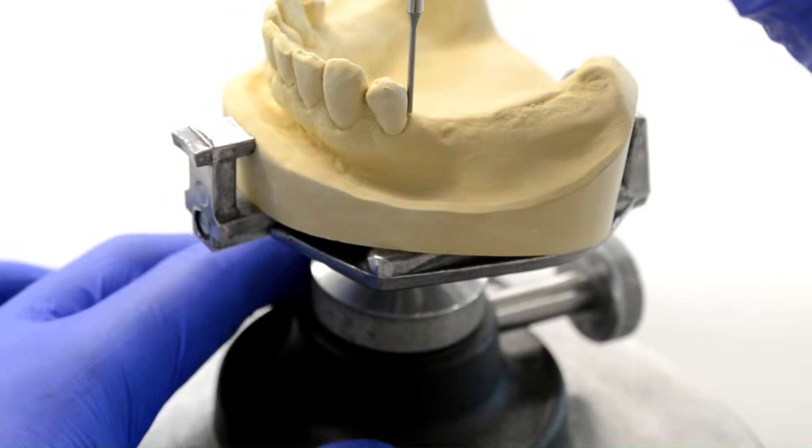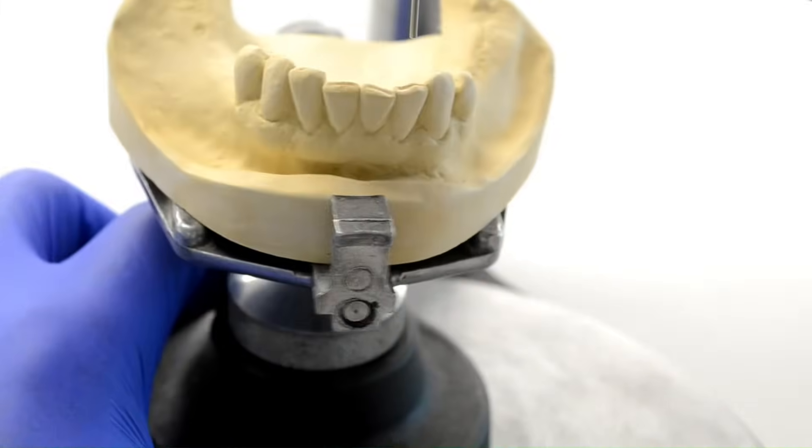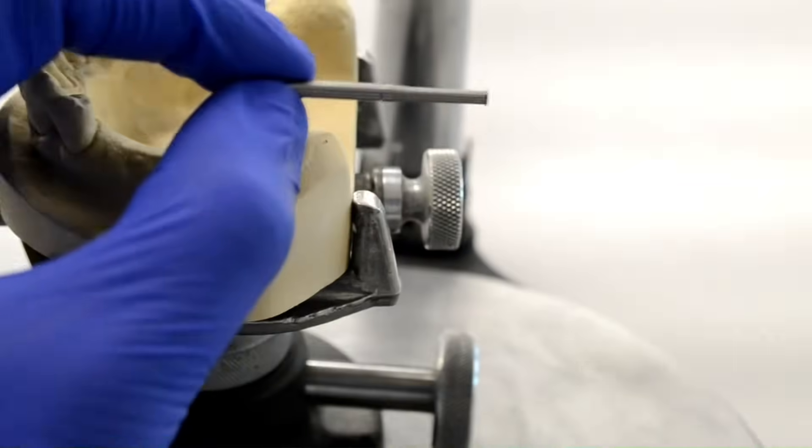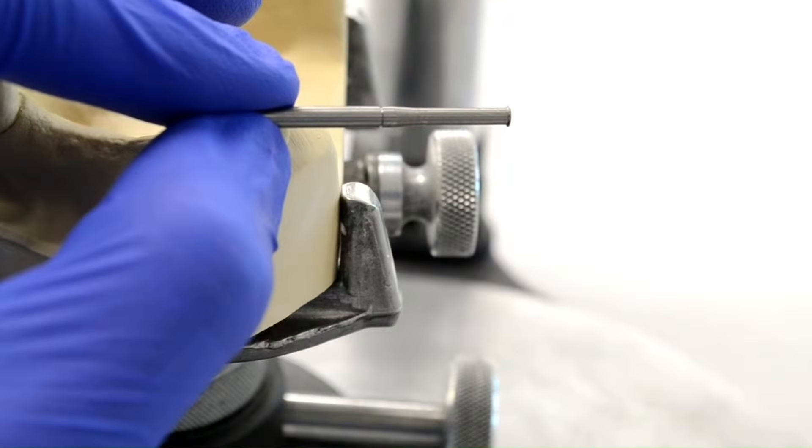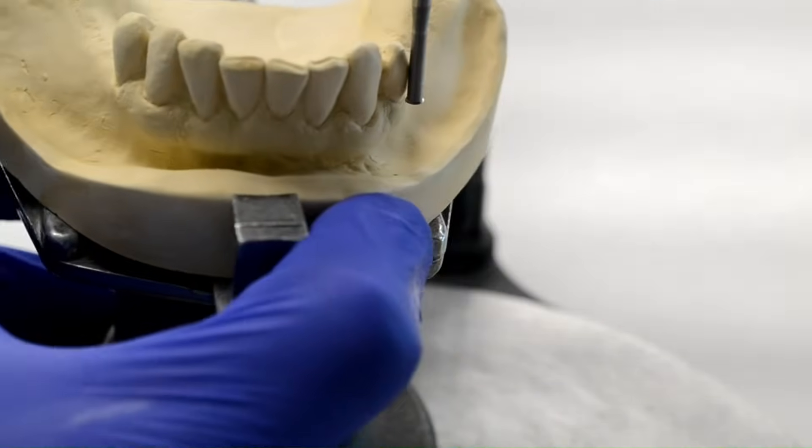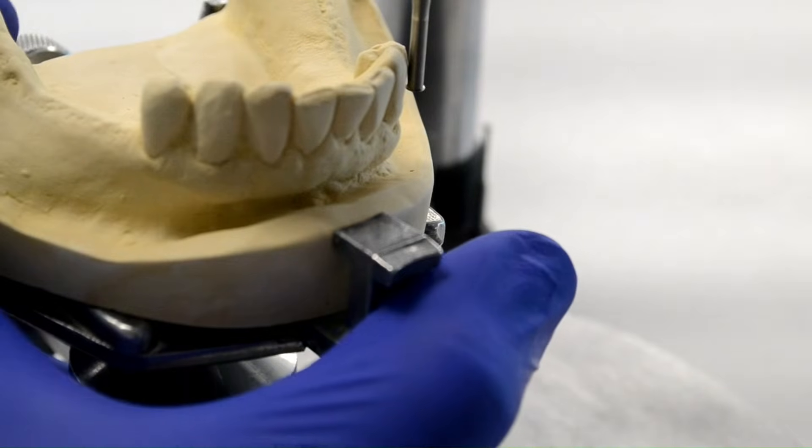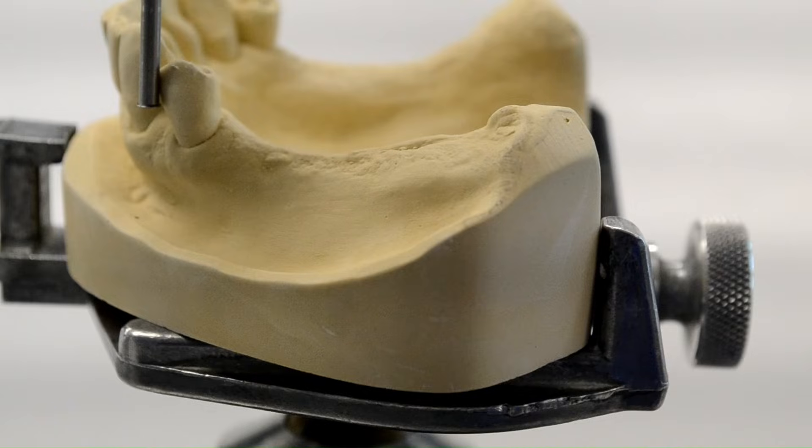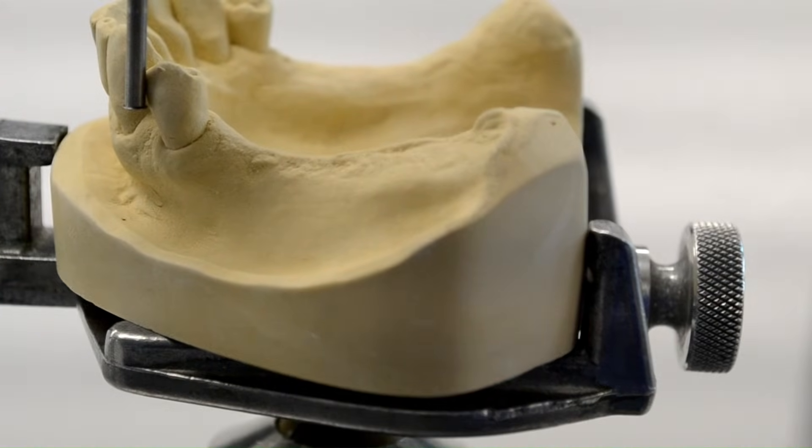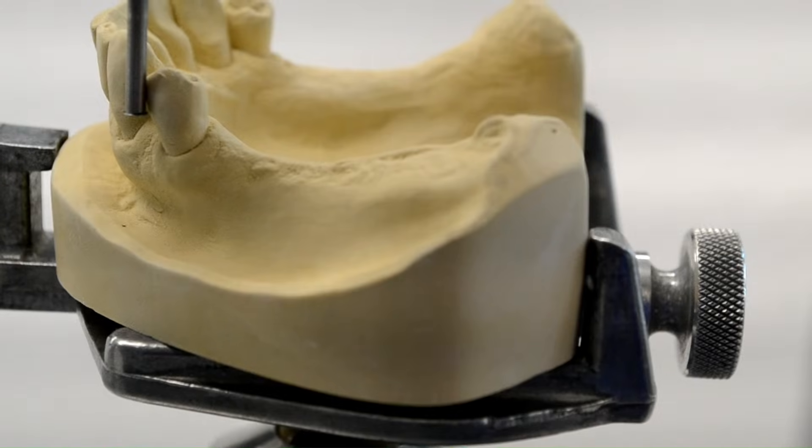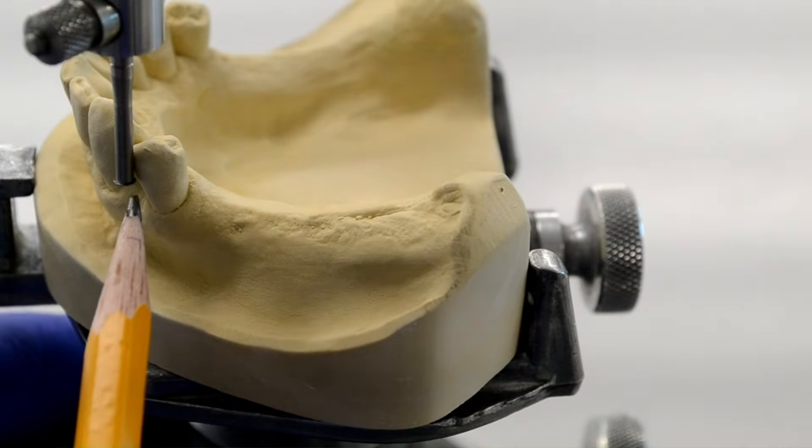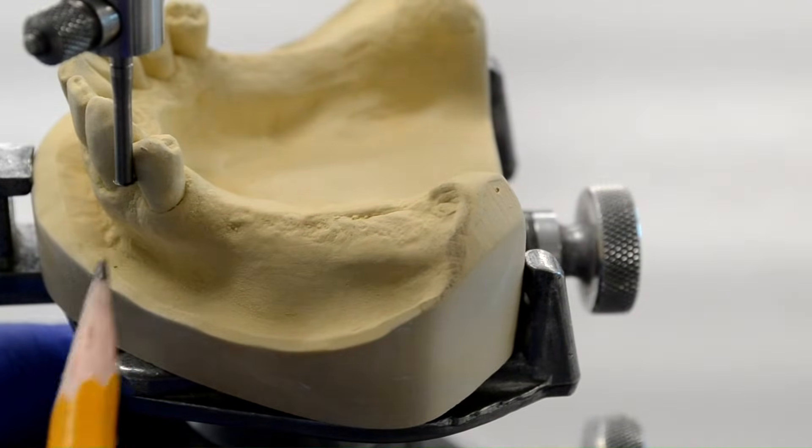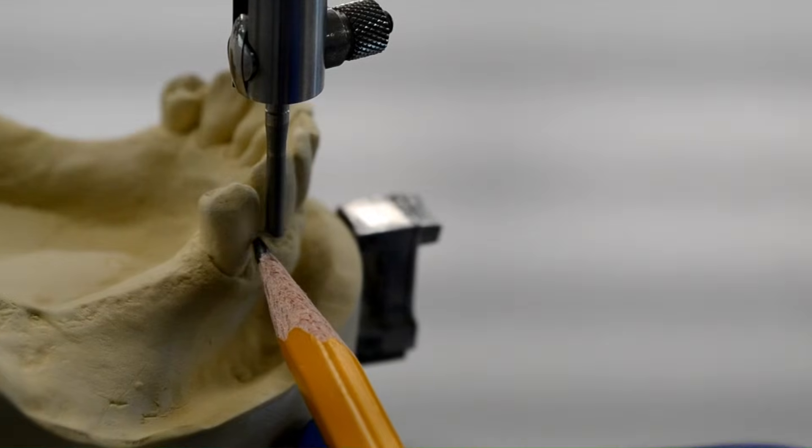Once we are satisfied with the path of draw, it's time to switch out the analyzing rod for the 0.01 inch undercut gauge. We will now attempt to find those undercuts that we decided we needed in our initial plan. In order to identify the location of an undercut, the undercut gauge needs to contact the tooth at the shank and the disc. The undercut is located at the point of contact of the disc with the tooth surface. To mark that undercut, the cast is pushed away slightly and a pencil mark is made at the contact point of the undercut gauge marking the undercut location. This process is repeated for all other abutments.